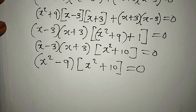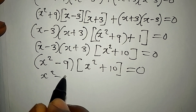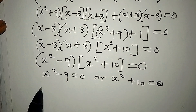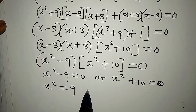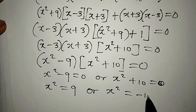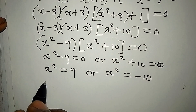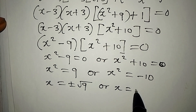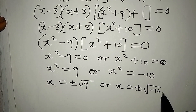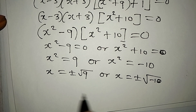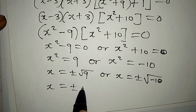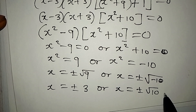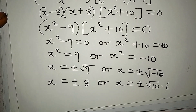Now we can apply the zero product rule, so that x squared minus 9 equals 0 or x squared plus 10 equals 0. This gives x squared equals 9 or x squared equals minus 10. Therefore x equals plus or minus the square root of 9, which is 3, or x equals plus or minus the square root of 10 multiplied by i because of the negative.